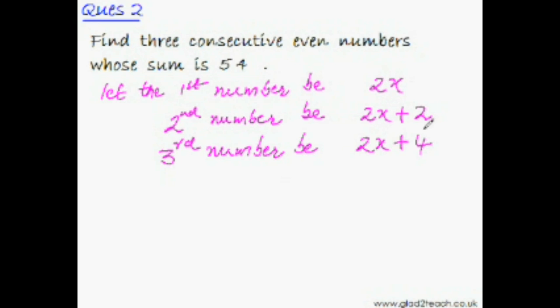Now using these algebraic expressions, we can easily create an algebraic equation. The second step is to create an equation, so the sum of all these expressions should equal 54. Since this equation is already balanced, you just have to solve it.